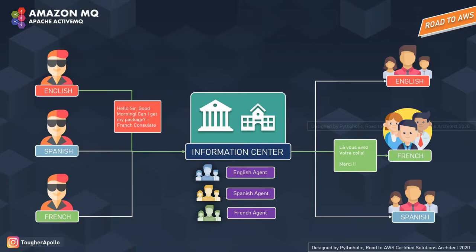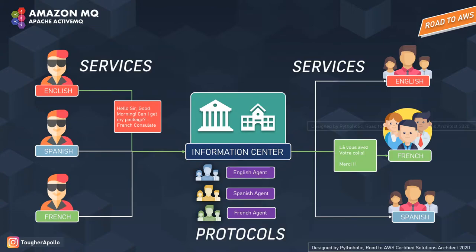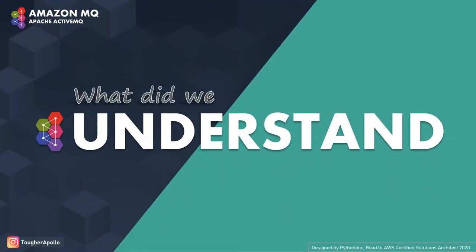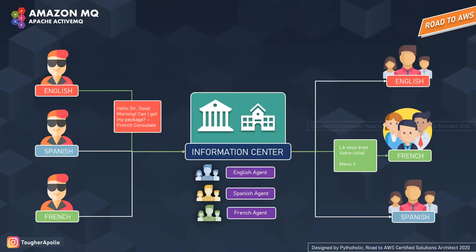If I am speaking English, I say 'Can I get my package to the French consulate?' — they can respond in French and I'll still be able to understand and receive the message back. So now imagine the users to be applications or services, the departments to be other applications, servers, or databases, the information center to be the message broker, and the agents to be the messaging protocols. Let's understand what we have actually learned from this scenario.